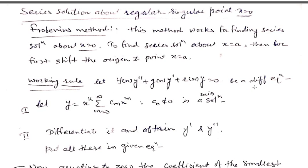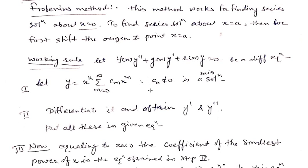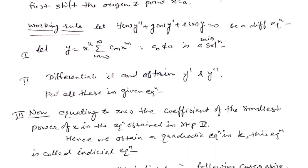When x equals 0 is a regular singular point and this is an ordinary differential equation for which we have to find a series solution, we assume that y equals x raised to power k, summation m from 0 to infinity, cm x raised to power m is a series solution. This Frobenius method suggests that the series solution will be in this form where c naught is non-zero. From here we differentiate y with respect to x twice, and putting the values of y, y prime, and y double prime in the given equation, we get an identity.